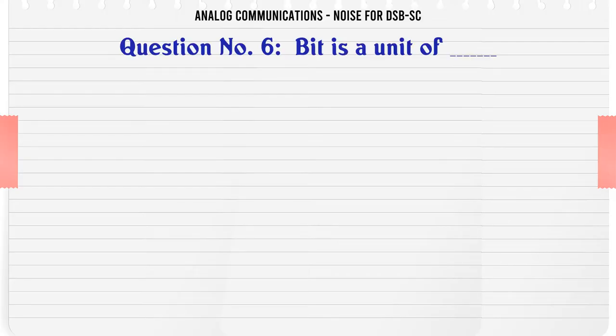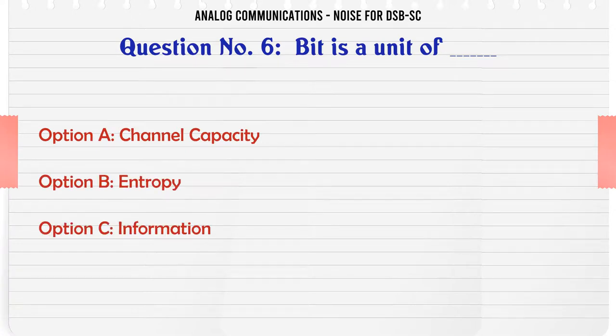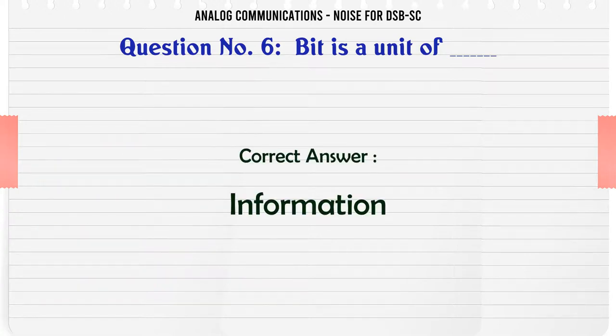Bit is a unit of: Option A: channel capacity. Option B: Entropy. Option C: Information. Option D: Rate of information. The correct answer is Information.